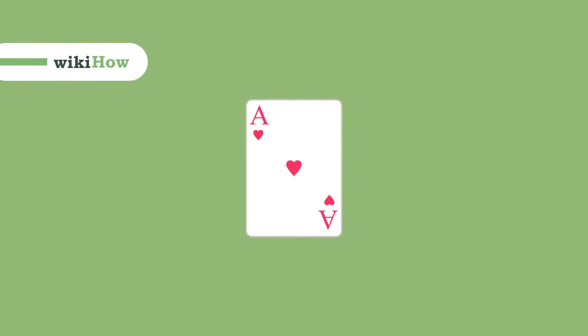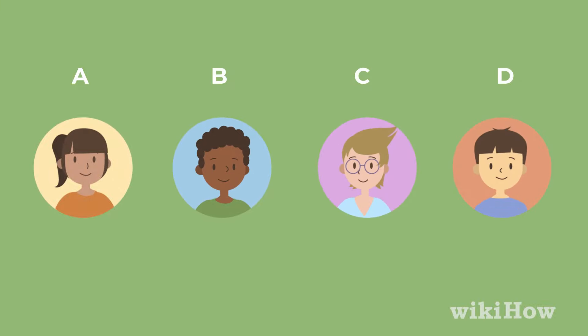Hearts is a card game that's traditionally played with four people. The goal of the game is to have the lowest score out of all four players when the game ends. Hearts is played over several rounds until one player scores 100 points or higher.